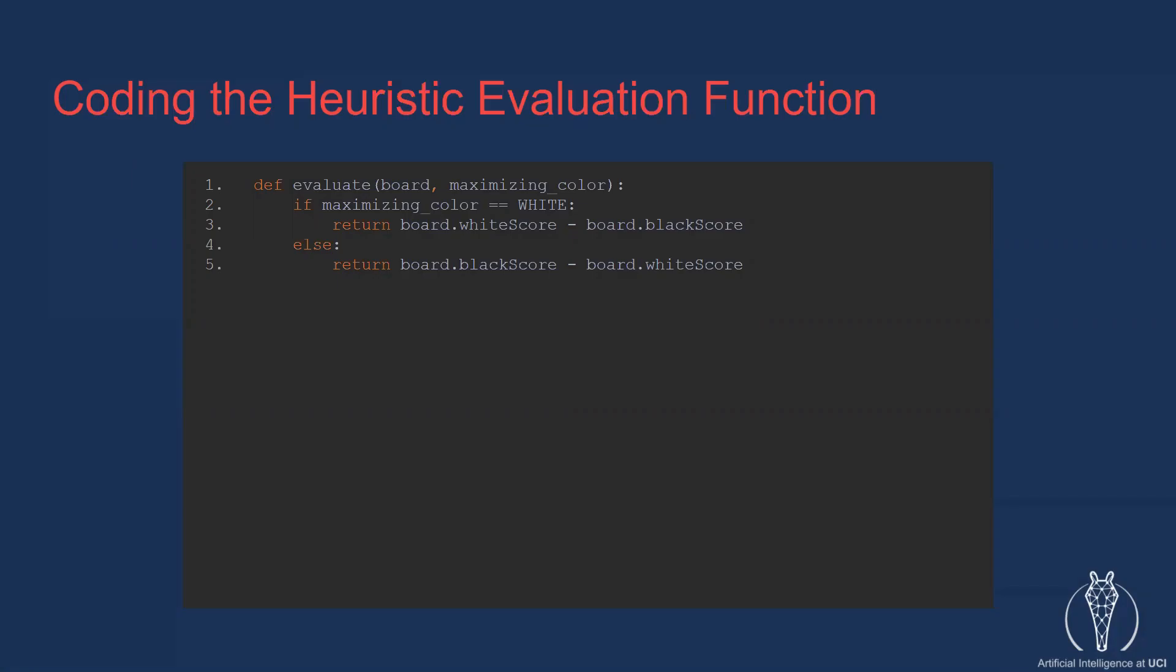You might also notice that we aren't using any sort of function to calculate the material score. Rather, the values are being accessed directly from attributes of the board class. This is because we already know how many of each piece will be present when the game begins. Therefore, given our weights, each player will always start with a score of 1290. Then, whenever a capture occurs, we subtract the value of that piece from the player's score. The underlying details aren't too important here. Just remember this: both players start with a score, and every time they lose a piece, we subtract the value of that piece from their score.